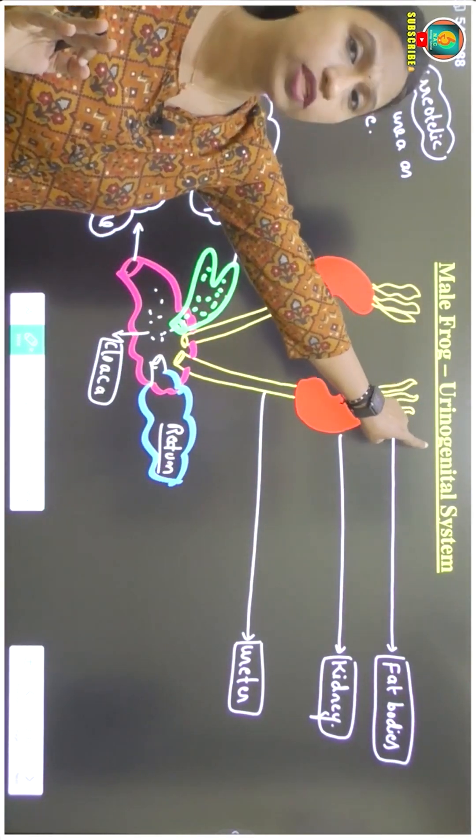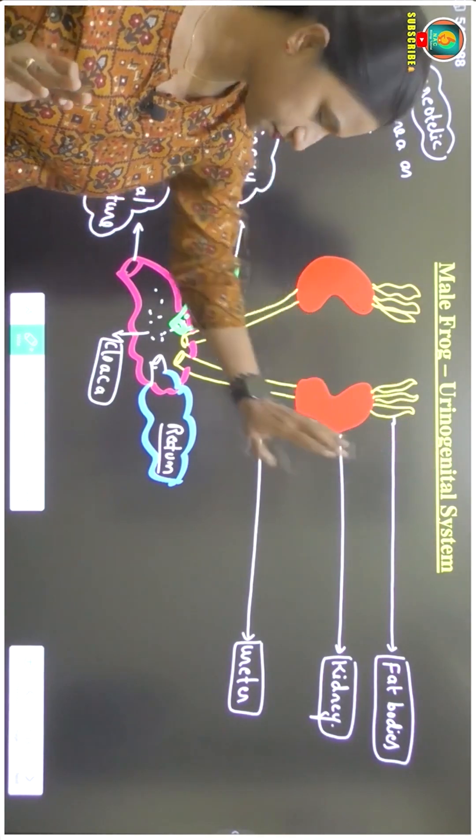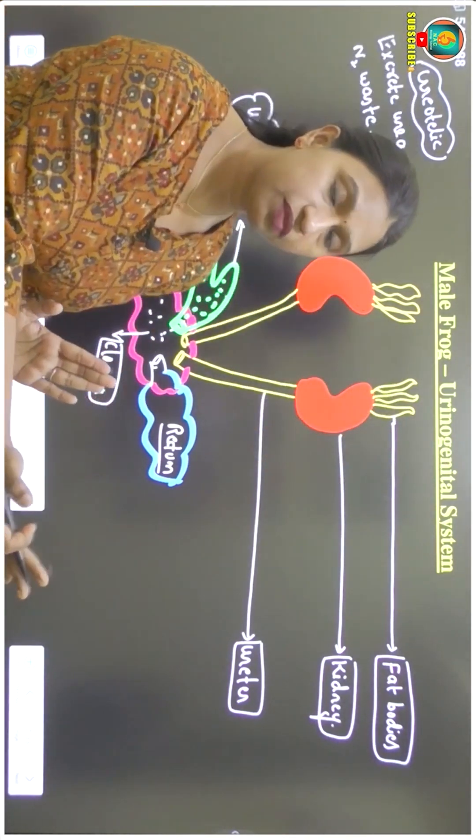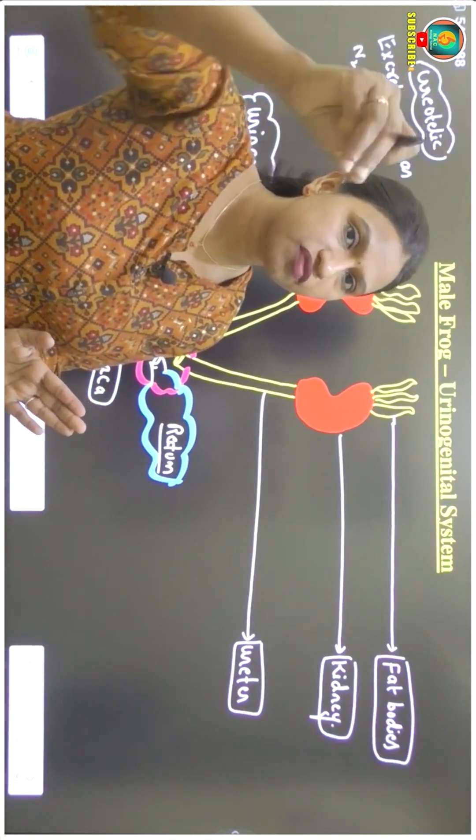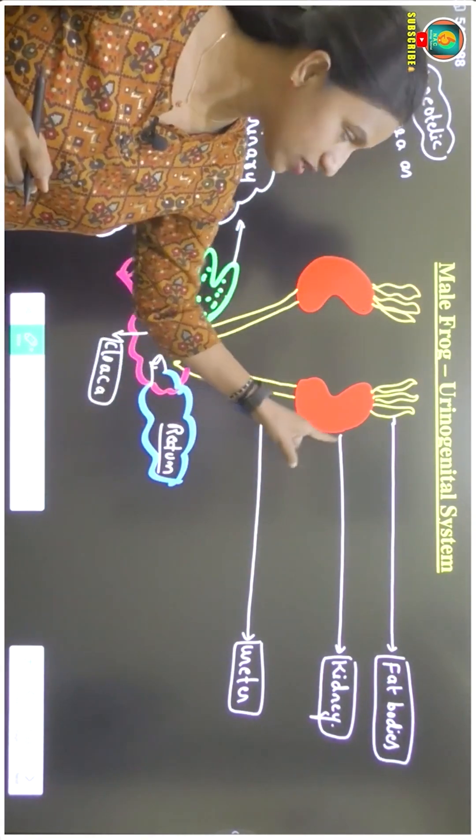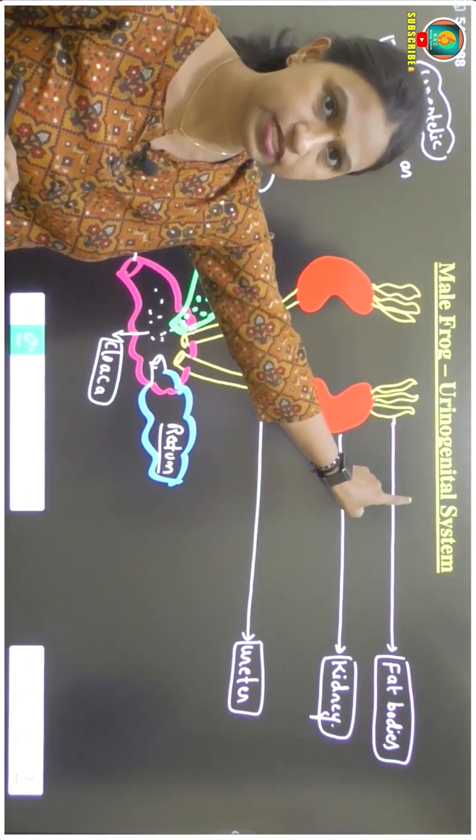But why we call it as a urinogenital system? I will tell you. Hope this much you have understood. Now, let me enter into the female frog excretory system. And there itself, I will tell you the reproductive system of female frog. Then you will understand why we call it as a urinogenital system.